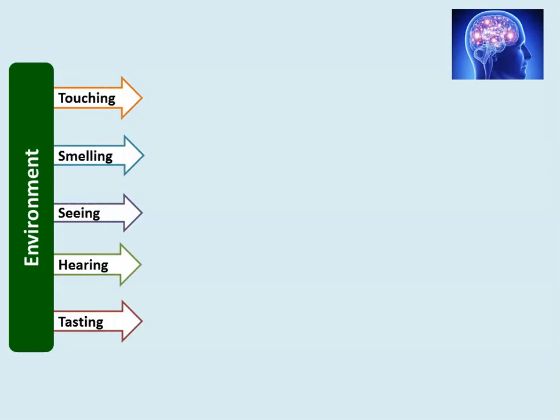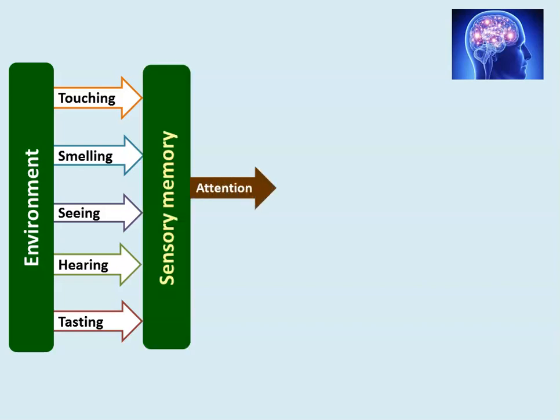We all learn from the environment through the five sense organs of our body. Whatever we learn in our lifetime is only through the five sense organs: touching, smelling, seeing, hearing, and tasting — the skin, nose, eyes, ears, and tongue. Whatever information we consume from the surrounding environment is only through these five sense organs, and the information received by them is immediately stored in the sensory memory.